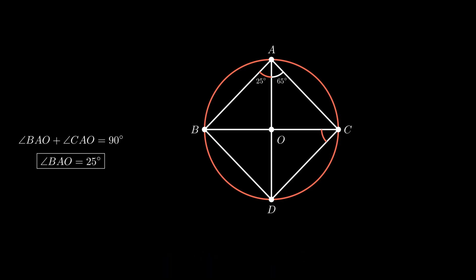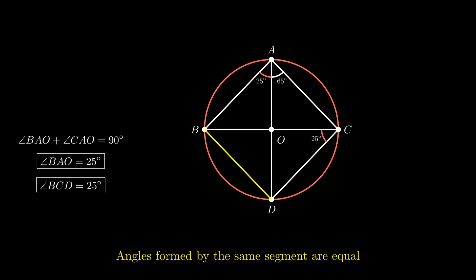For the calculation of angle BCD, observe that angle BCD and angle BAD are formed by the same segment BD. As angles formed by the same segment are equal, therefore angle BCD equals 25 degrees.